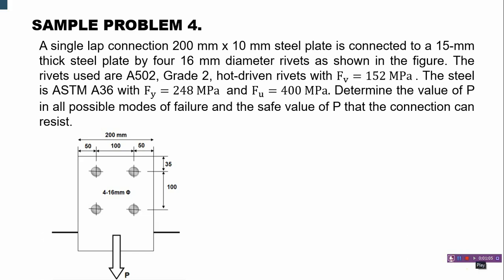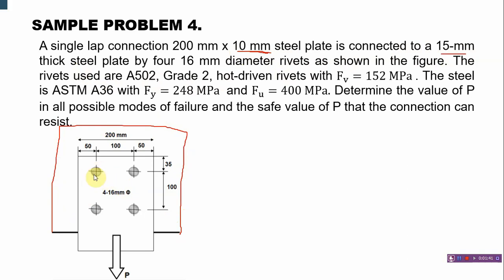As seen in the figure, this is a tension member subjected to tensile force P. The 10mm plate is the tension member, while the 15mm thick plate is the gusset plate. We need to list all possible failure modes and their corresponding P values.